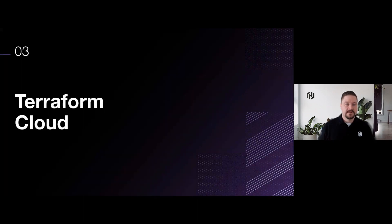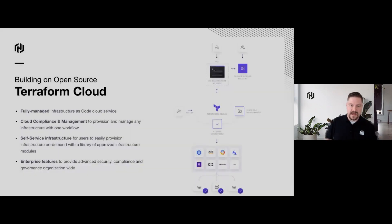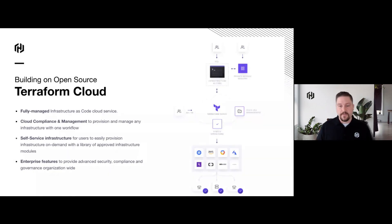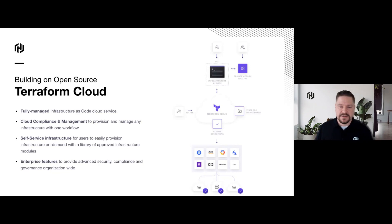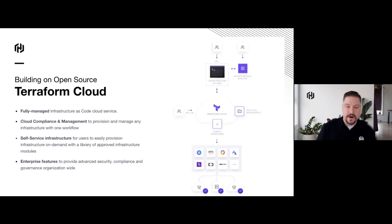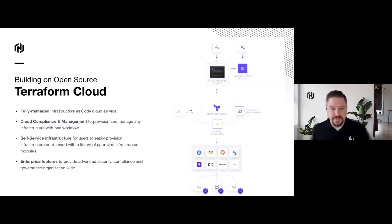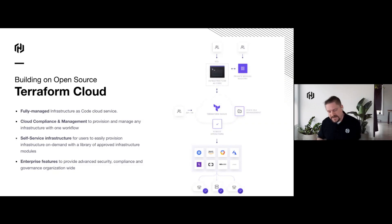This is where I want to start talking about Terraform Cloud. Terraform Cloud is built on open source — it uses that infrastructure-as-code base and builds upon it. The difference between Terraform Cloud and Terraform Enterprise is that Terraform Cloud is fully managed code as a service, providing enterprise features out of the gate. We include compliance and management to ensure we're doing guardrails, self-service infrastructure to allow users to easily provision while staying within compliance bounds, and overall enterprise features and functionality.